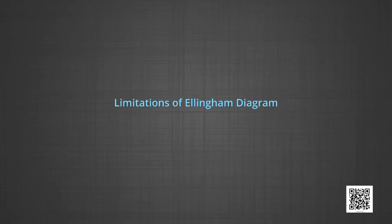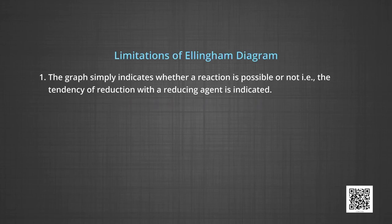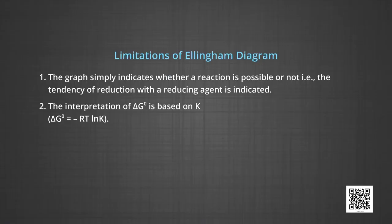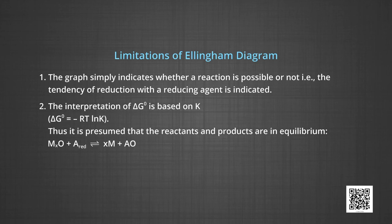Let us see the limitations of the Ellingham diagram. The graph simply indicates whether a reaction is possible or not — that is, the tendency of the reducing agent is indicated. This is so because it is based only on thermodynamic concepts. It does not say anything about the kinetics of the reduction process; we cannot answer questions like how fast it could be. The interpretation of ΔG° is based on the equilibrium constant K, so it is presumed that the reactants and the products are in equilibrium.